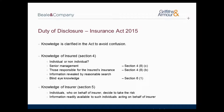The level of knowledge required of the insured to give a fair presentation of risk under the first limb — every material circumstance which the insured knows or ought to know — is clarified by section 4 of the Insurance Act. In terms of actual knowledge, the knowledge of a number of people may be relevant. Where the insured is an individual, they will be attributed with the actual knowledge of any broker or individual who arranged their insurance. For non-individuals such as partnerships, LLPs or companies, the insured will be attributed with the actual knowledge of firstly its senior management — individuals who play significant roles in the making of decisions about how the insured's activities are to be managed or organised — and secondly persons responsible for arranging its insurance.